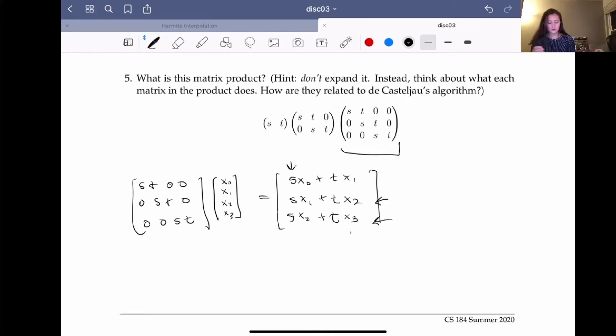Now that we know this first matrix is linearly interpolating four points and giving us three points, we can see that this next matrix will linearly interpolate these three new points and turn them into two new points.